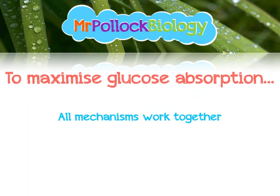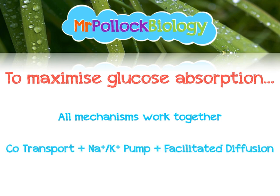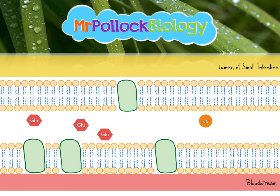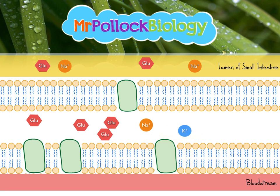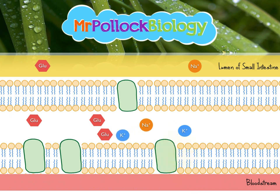All mechanisms work together to maximise the absorption of glucose: co-transport, the sodium-potassium pump, and facilitated diffusion. The lumen of the small intestine is at the top, the inside of the epithelial cell in the middle, and the bloodstream at the bottom. Co-transport moves glucose and sodium into the cell. Active transport then pumps potassium in and sodium out, maintaining a favourable concentration gradient of sodium so that co-transport can continue. Facilitated diffusion moves glucose into the bloodstream.